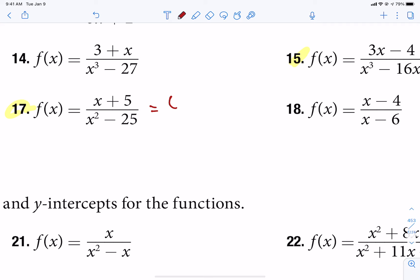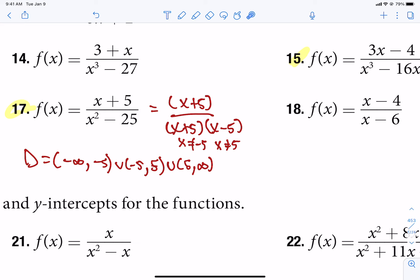So first step, get it in factored form. So x plus 5 and x minus 5 is the factorization of our denominator. That will tell us that we are missing negative 5 and positive 5. So do your domain first before you contemplate what those points are really doing.